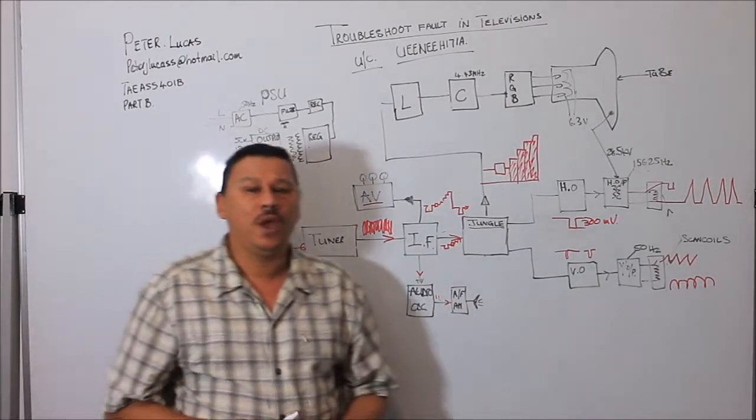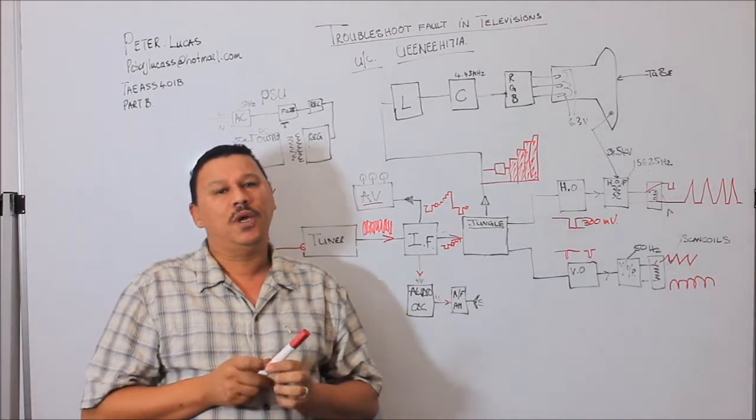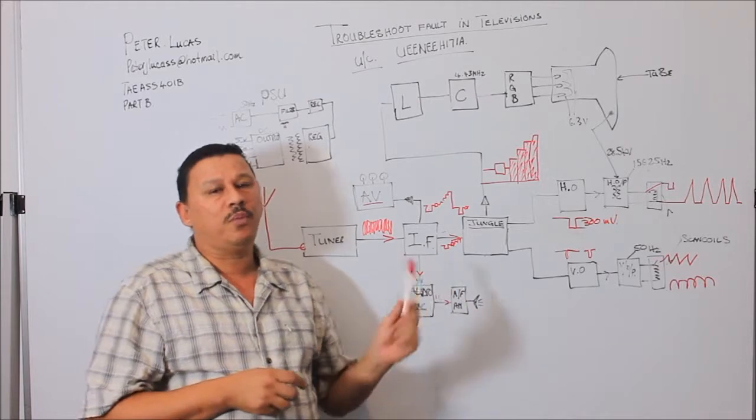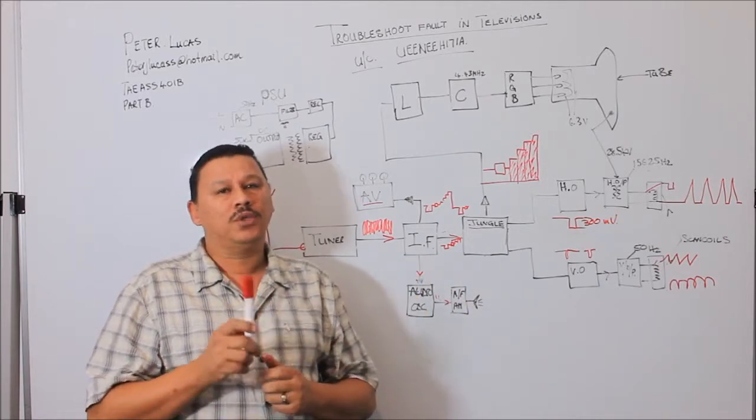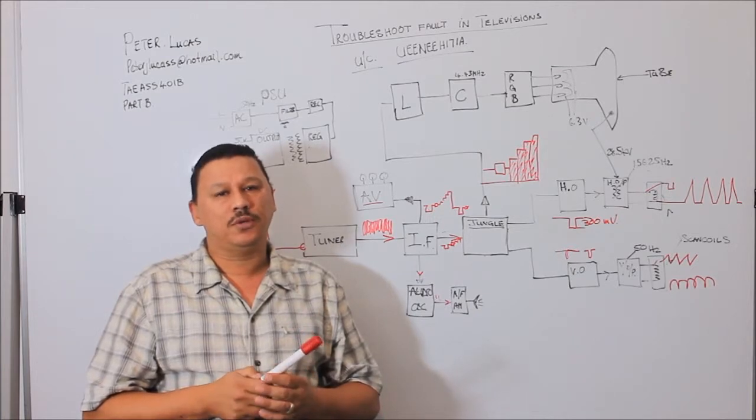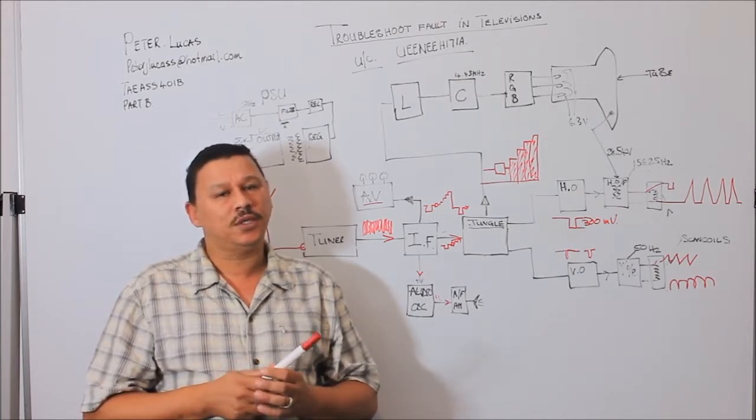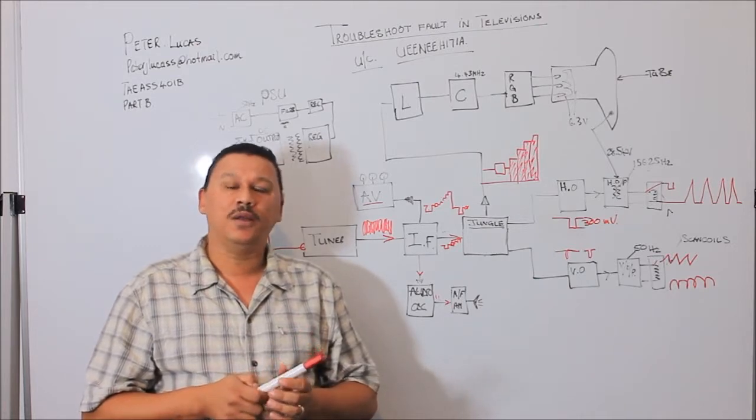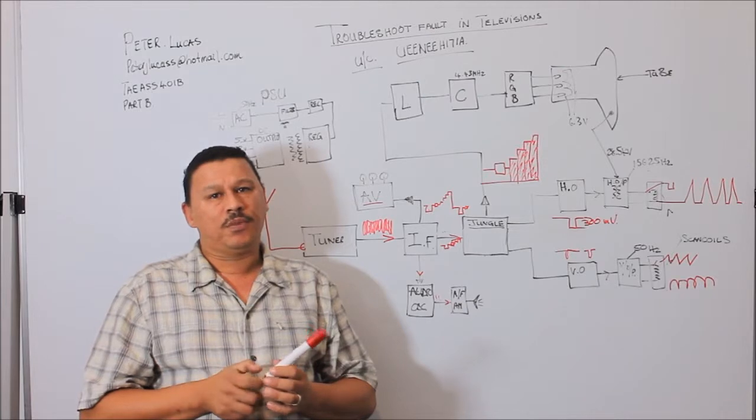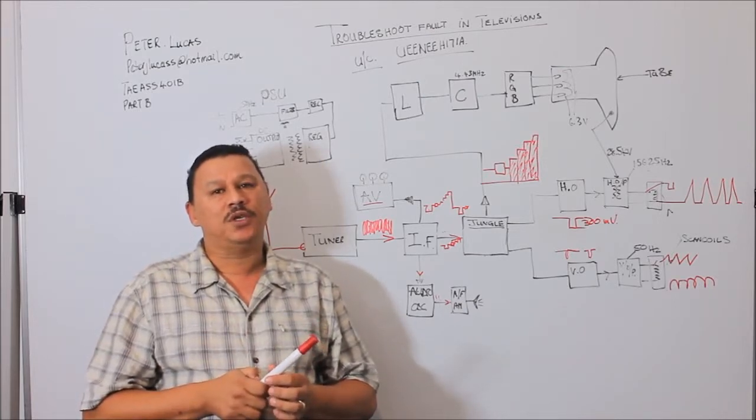The next fault that you could have, for example, is you've got a color television with a black and white picture. Now before you start repairing anything, I would suggest first check your settings on your television. Once you go into your menu, you will find that there is a facility where you can adjust the color, the luminance and volume and so on. I have had many situations where the color was actually turned off.